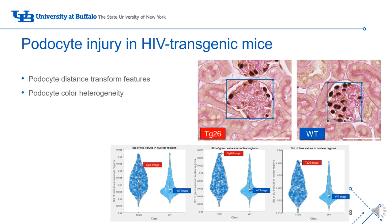Additionally, we also found the heterogeneity of color values in podocytes to be distinctive between wild-type and TG26 mice. The larger range and standard deviation of podocyte red, green, and blue values could be attributed to an increase in transcriptional activity in these podocytes in response to inflammatory stress.